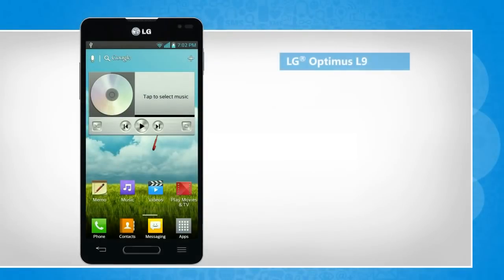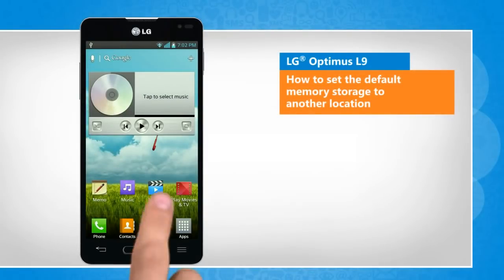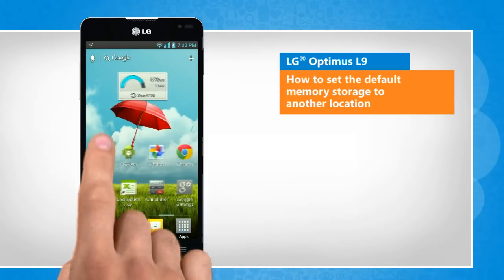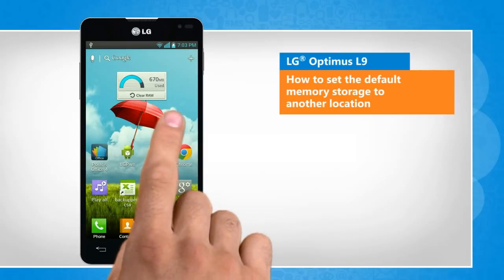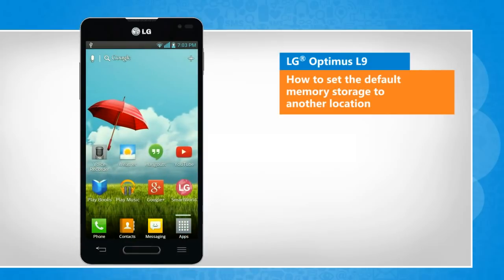Hi friends! Do you want to change your LG Optimus L9 smartphone's default memory storage location? Here's how you can change the default storage location for pictures and videos captured by the camera app, and files downloaded from the internet on your LG smartphone.